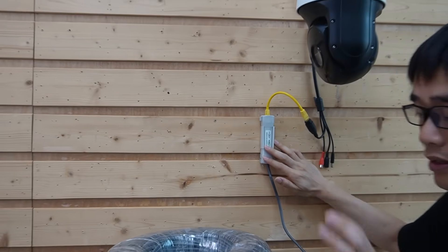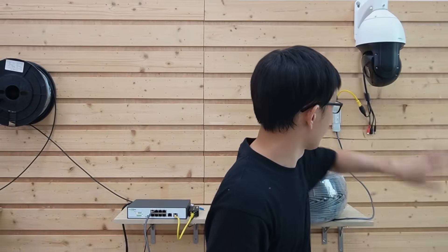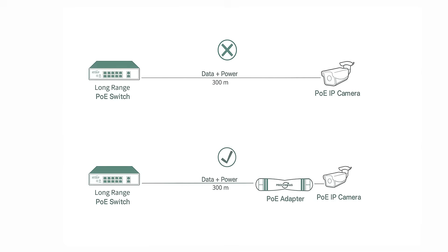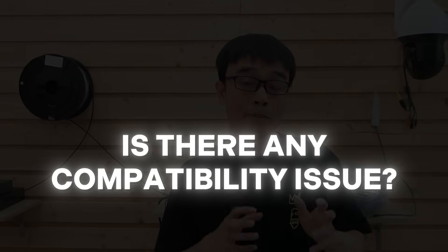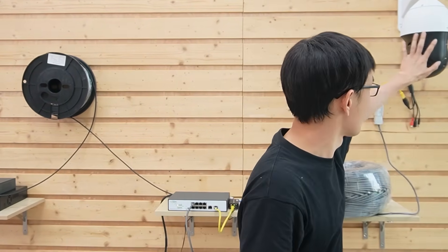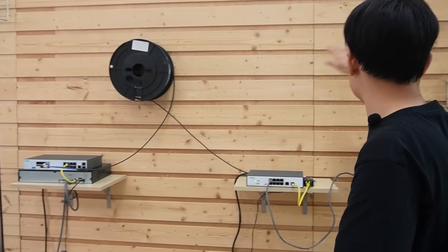Why do we need this PoE extender? Even though the PoE switch can push data up to 500 meters, this camera is just a regular camera — it cannot push the signal back to reach the PoE switch. The PoE extender takes the signal from the camera and sends it back to the PoE switch, because there is also a long-range chipset built into the PoE extender. This also answers the compatibility question: since the long-range PoE switch works with this PoE extender, from the camera's perspective it is just a standard TCP/IP network. Now we can see the live feed from the camera.